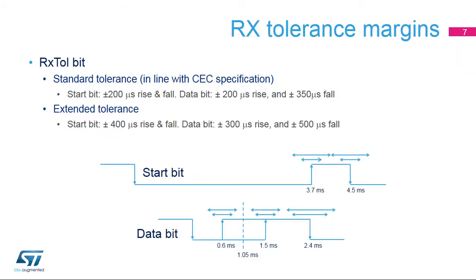The HDMI CEC controller supports two RX tolerance margin modes. First, a standard tolerance mode in line with CEC specifications: plus or minus 200 microseconds on start bit rise and fall time, and plus or minus 200 microseconds on the rising edge of a data bit, and plus or minus 350 microseconds on the falling edge. The second is an extended tolerance mode, where the start bit timing is extended to plus or minus 400 microseconds for rise and fall transition, and plus or minus 300 microseconds on the rising edge and plus or minus 500 microseconds on the falling edge of a data bit.